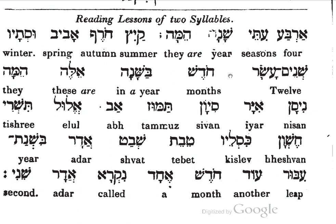Let's run through this again slowly. Look at the translation as we go. Arbang, ngite, shana, himema — Kayits, Khoref, Abib, Ustav. Sheni Ngasara Khodesh bashana eile — himema.